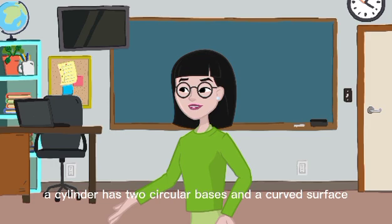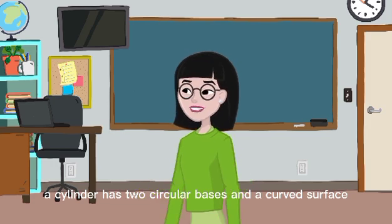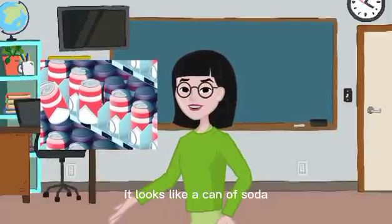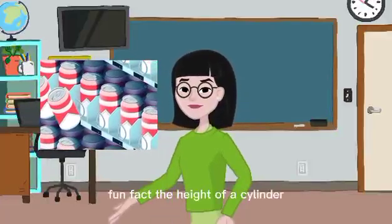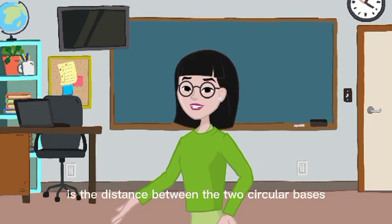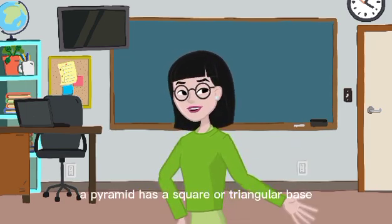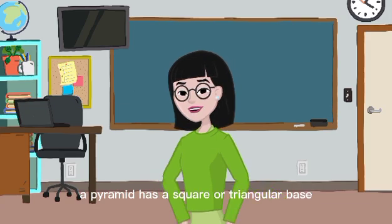A cylinder has two circular bases and a curved surface. It looks like a can of soda. Fun fact! The height of a cylinder is the distance between the two circular bases.